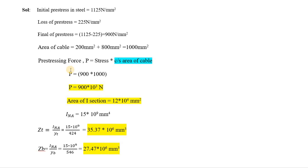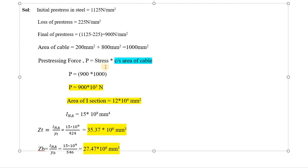Next is pre-stressing force. We know the standard formula for stress is load by area. But here we already know the stress, so we are calculating the pre-stressing force. Pre-stressing force P equals stress into area of cable. Please keep it in mind — do not use area of I-section, use area of the cable. This is important. So P equals the final stress, that is 900 Newton per mm square, into 1000 mm square, which gives 900 into 10 power 3 Newton.